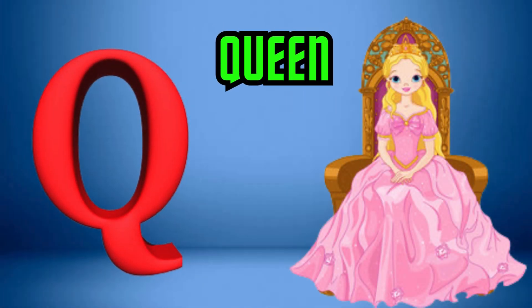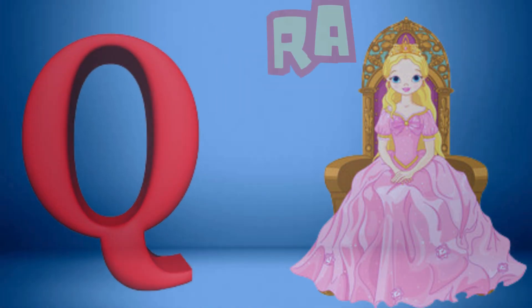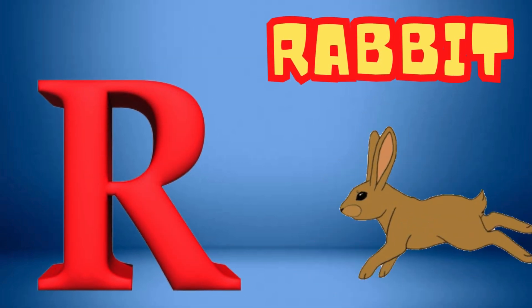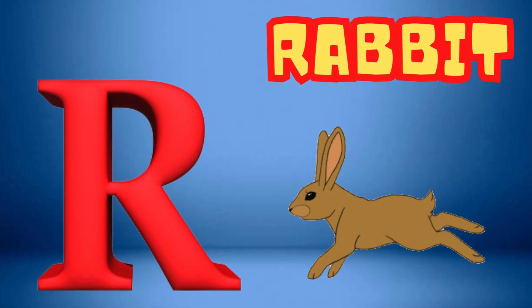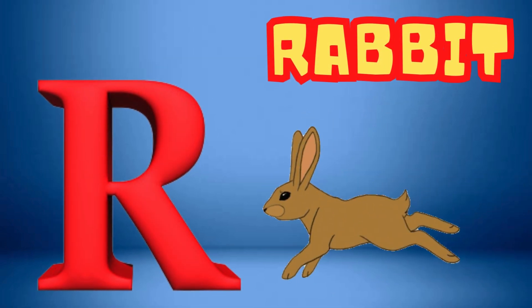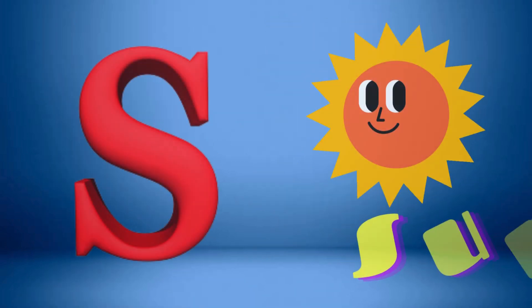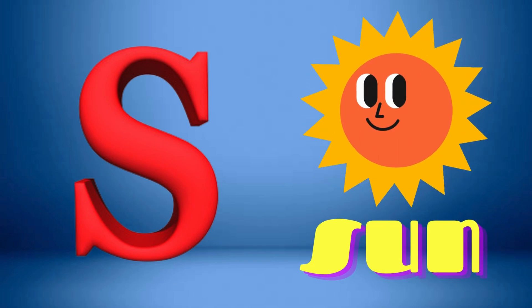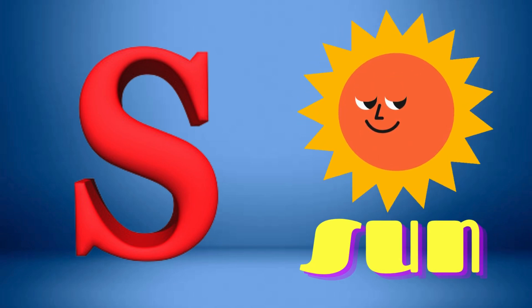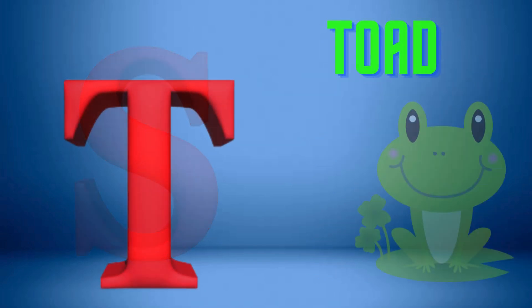Q is for Queen, Q-Q-Queen. R is for Rabbit, R-R-R-Rabbit. S is for Sun, S-S-Sun.